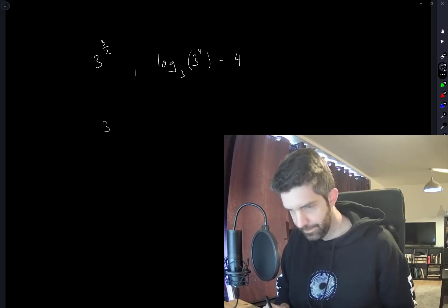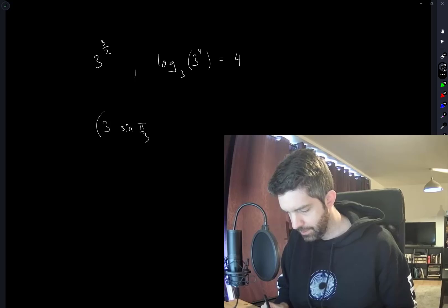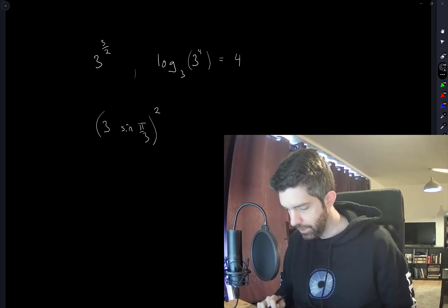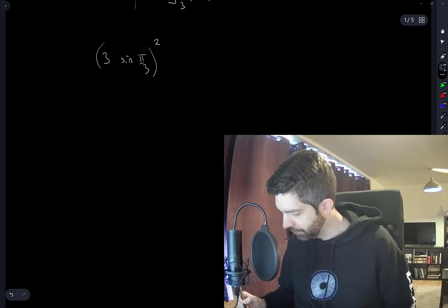We have 3 sine of pi over 3 squared. Okay, let's figure out what sine of pi over 3 is.